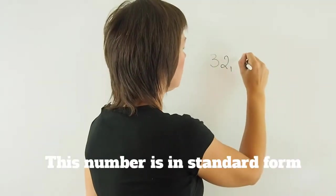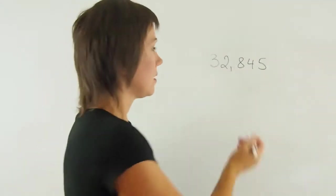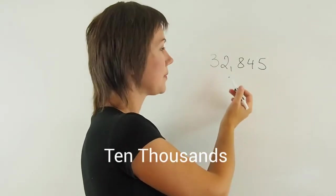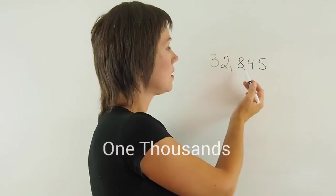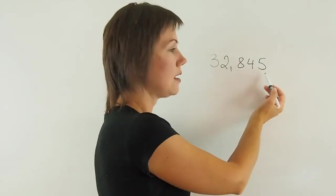32,845. This is ten thousands. This is one thousands. This is hundreds, tens, and ones.